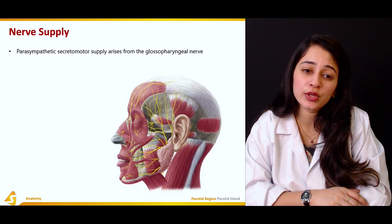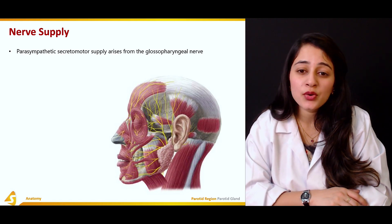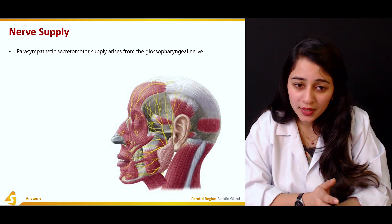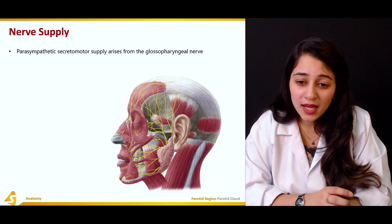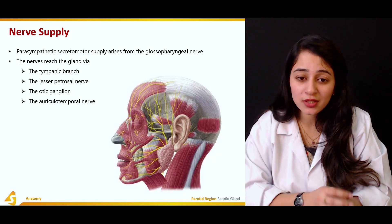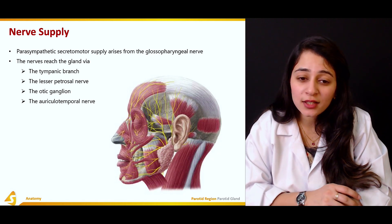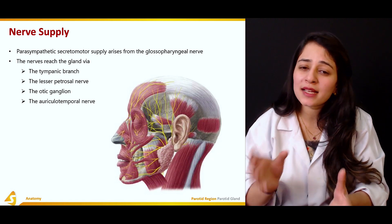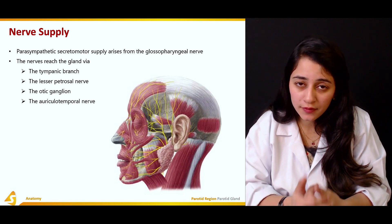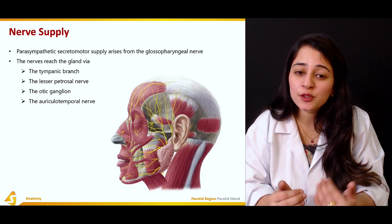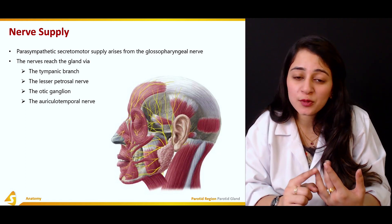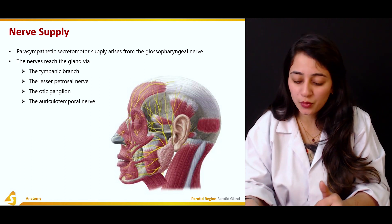The nerve supply of this region: the parasympathetic secretomotor supply arises from the glossopharyngeal nerve. The nerves reach the gland via the tympanic branch, the lesser petrosal nerve, the otic ganglion, and the auriculotemporal nerve.